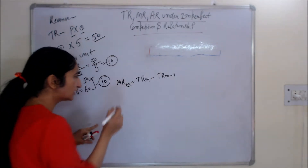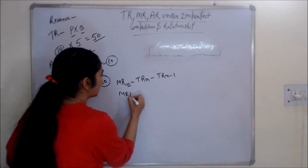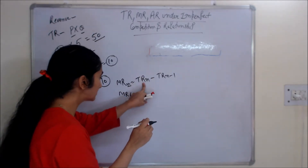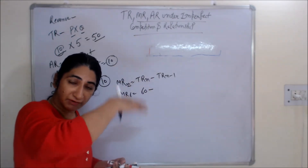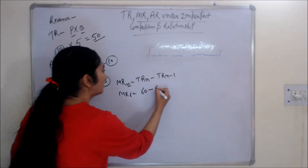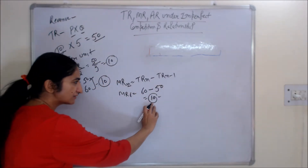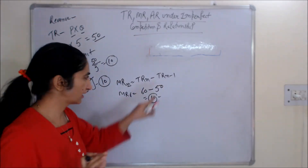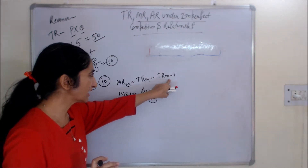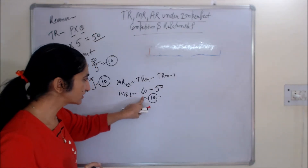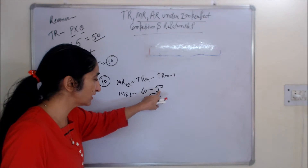The formula for marginal revenue is: MR equals TR of N units minus TR of N minus 1 units. So if you are given the total revenue of N units and the total revenue of N minus 1 units, the difference gives you the marginal revenue for that unit.